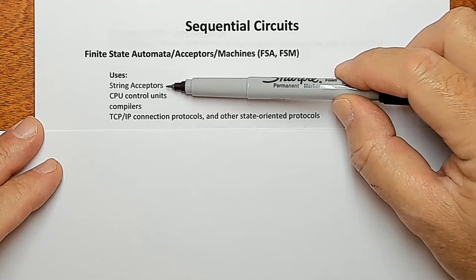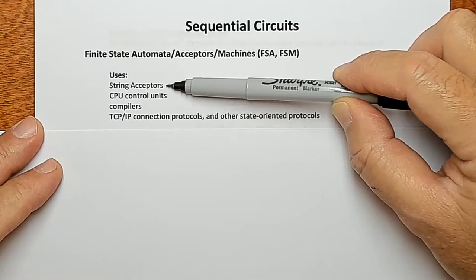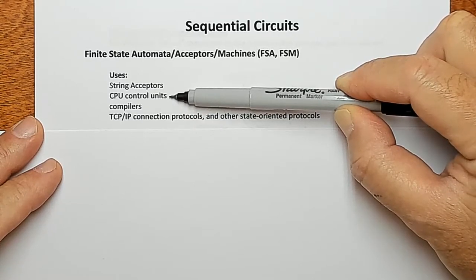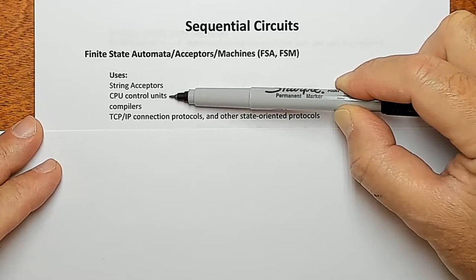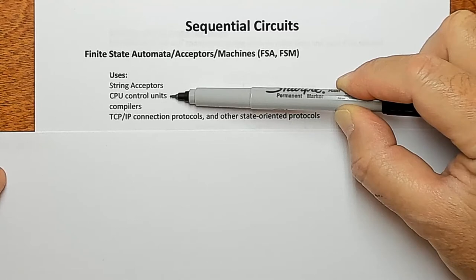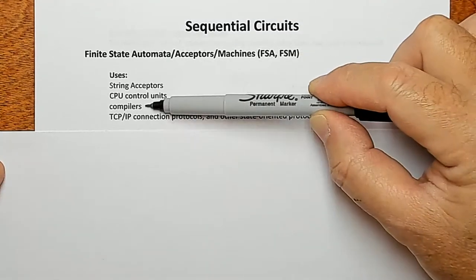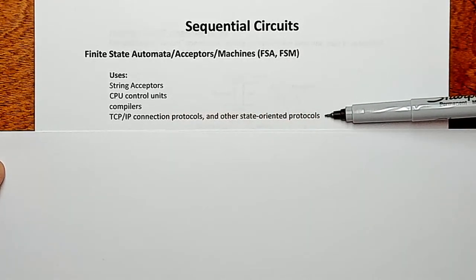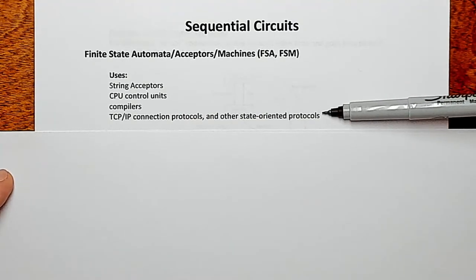Finite State Machines are useful as string acceptors. This is used in compilers to check your code and make sure that it's syntactically correct. They're also used in digital design for microprocessors — it's a simple way to provide a control circuit that you can implement in hardware. Compilers use these extensively to process your code and turn it into assembly code. And at the higher level of the abstraction stack, we have networking, which also uses state machines.